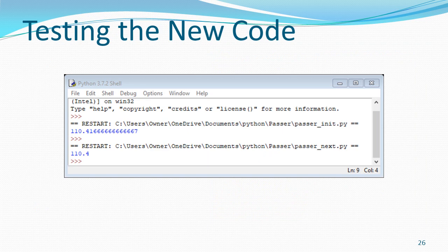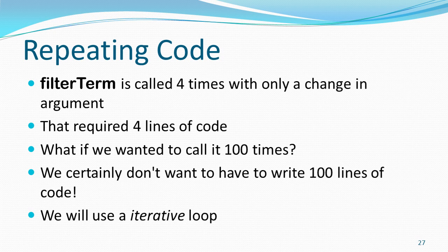We test our new code again and we can see it's working. We got a nice rounded 110.4 and we didn't come up with a different number, which is very encouraging. However, we're still not completely pleased because we have filterTerm called four times with only a change in argument. Four lines of code isn't a big deal, but what if we had a section of code we had to call a hundred times? You certainly don't want to write a hundred lines of the same code with just a change of arguments.